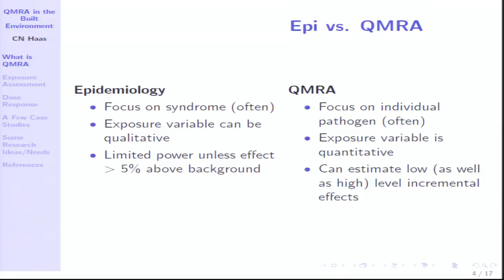I want to contrast my take on the difference between microbial risk assessment and epidemiology — and I apologize in advance for stepping on the feet of epidemiologists in the audience. Typically, epidemiology focuses on syndromes, not exclusively but often. The exposure variable can be qualitative and descriptive in nature. Epidemiology tends to have limited power due to size effects unless the effect is greater than about 5% above background, and even that's being generous. QMRA, on the other hand, focuses on individual pathogens, the exposure variable is quantitative, and we can estimate low as well as high incremental effects — down to the level of public health interest, which is often 10 to the minus 4 or 10 to the minus 6 incremental illnesses per year.